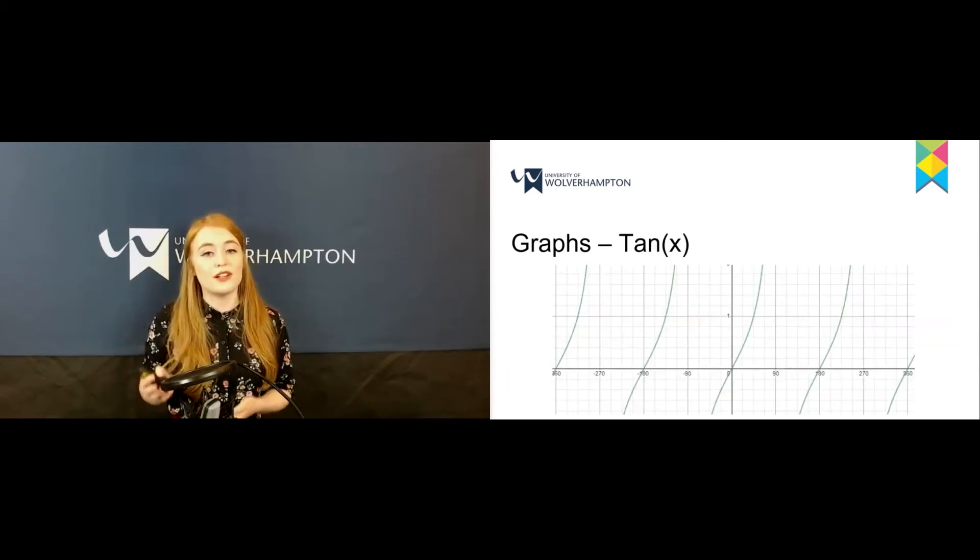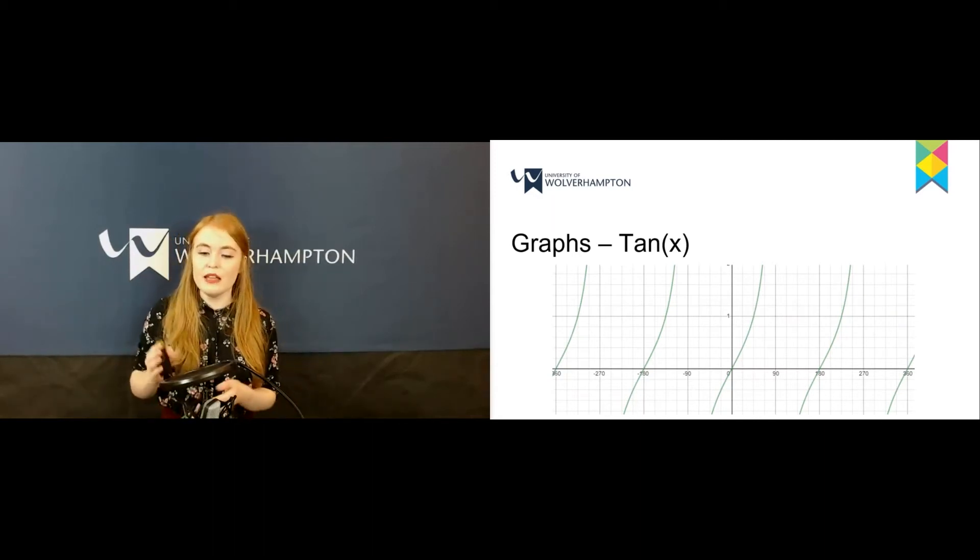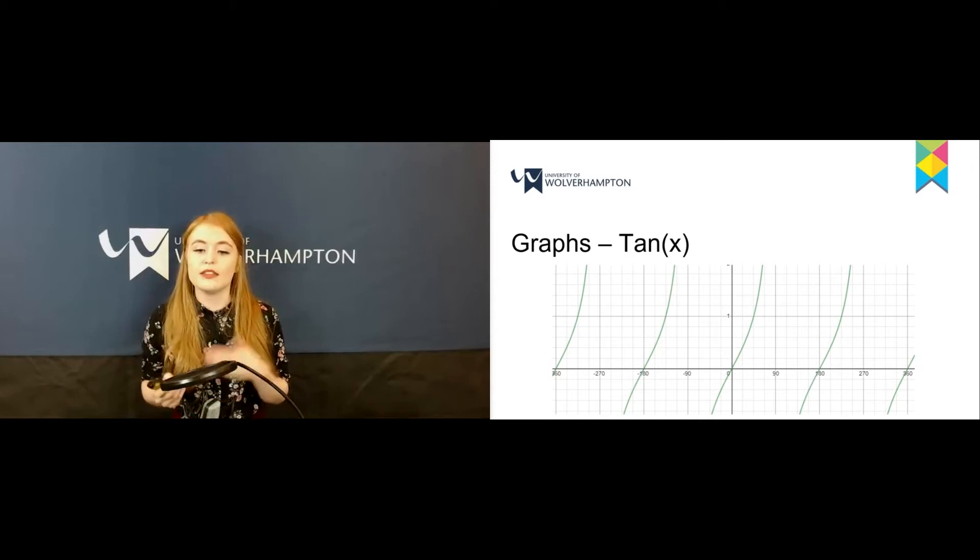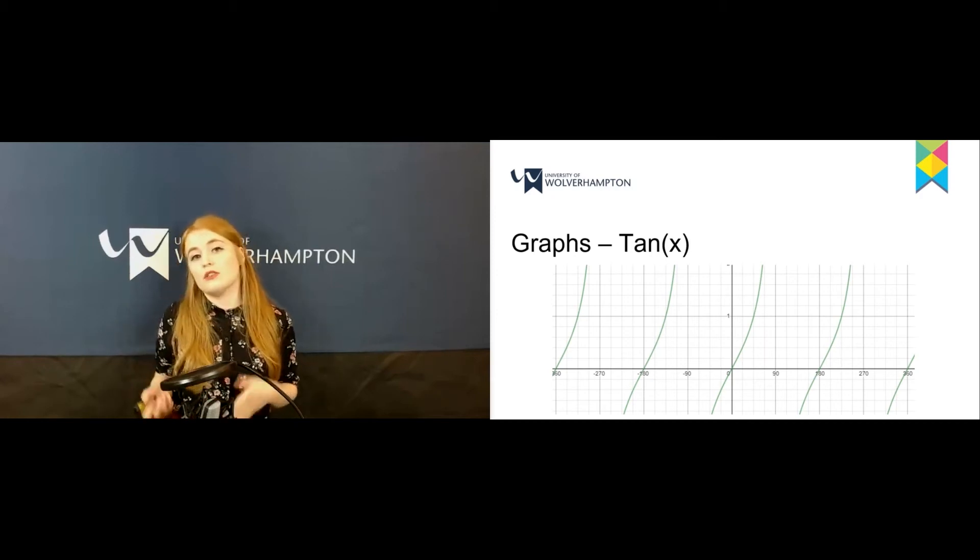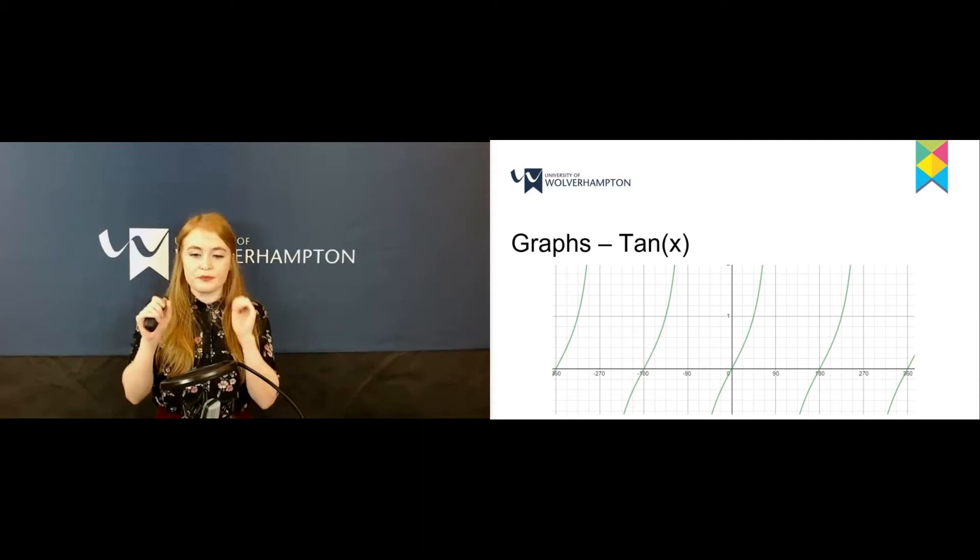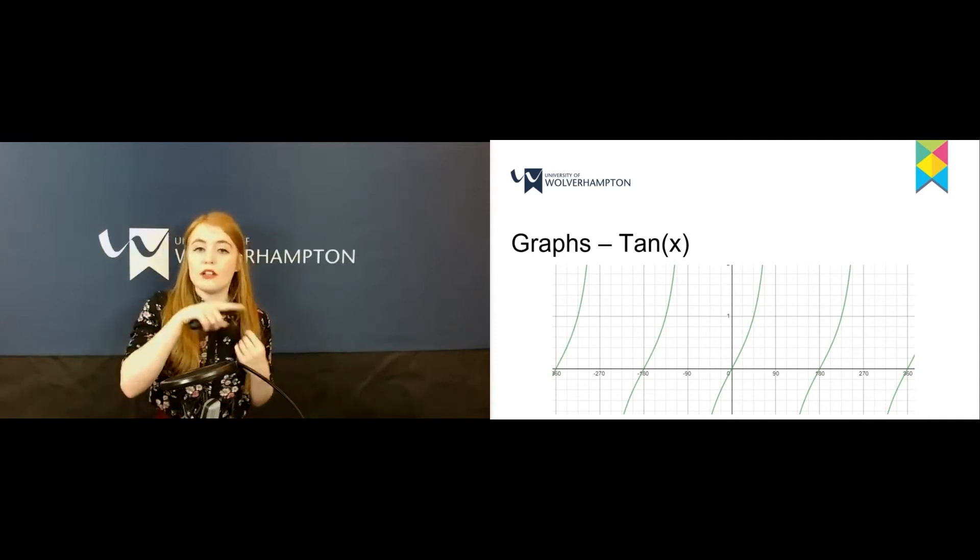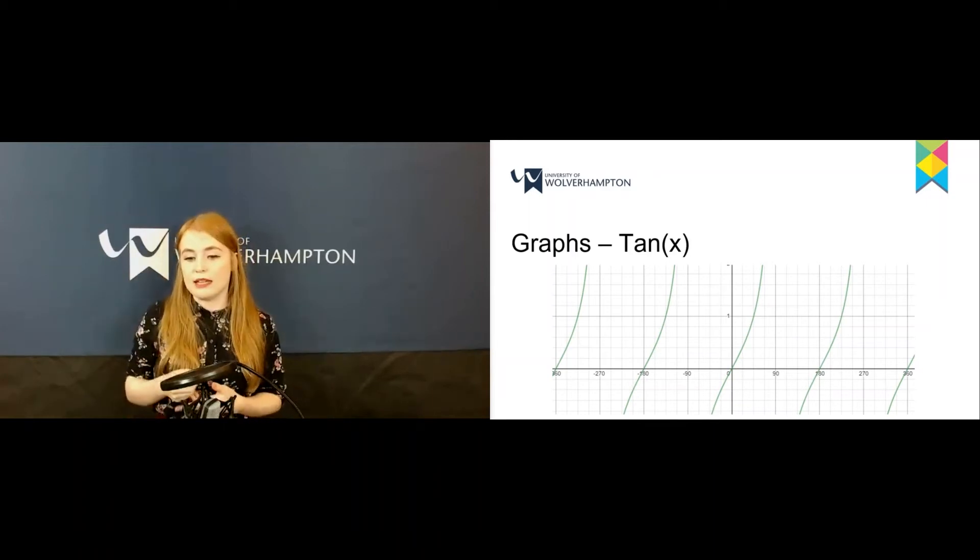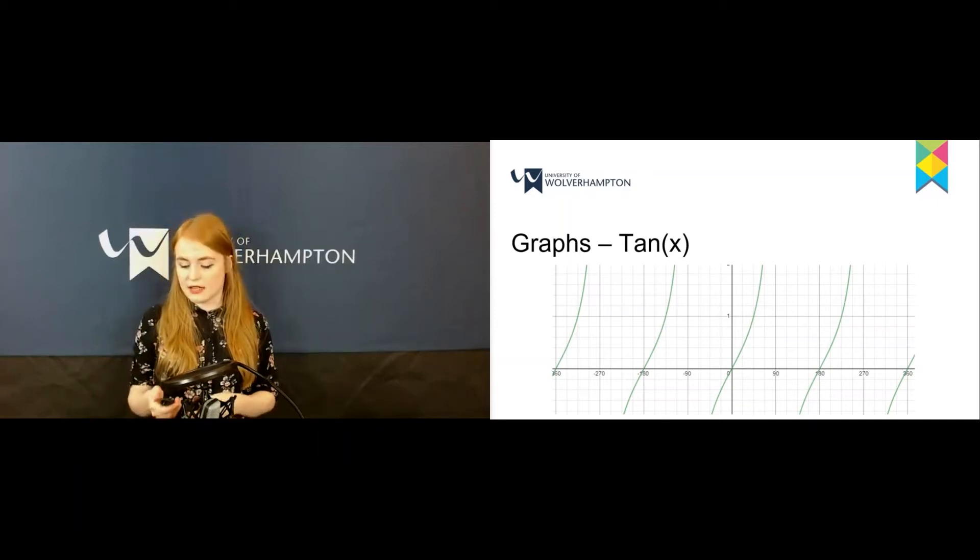A graph that looks completely different is the tan graph. At -90, 90, and 270 there are things called asymptotes. They're lines that are invisible. If you look at the line that tan is making, it's getting closer and closer to that line but never actually touches it. That's called an asymptote.